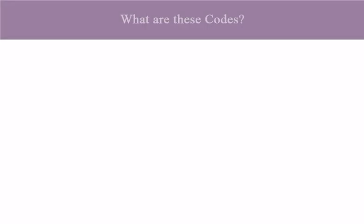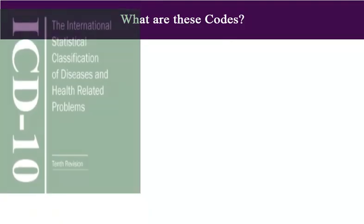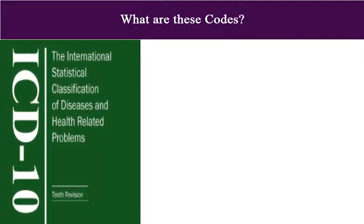What are these codes? There are two classifications in use for coding. The first is the International Classification of Diseases, 10th Revision, commonly known as ICD-10. This classification has been devised by the World Health Organization and its codes cover all reasons for patients' admissions to hospital. These codes are widely used internationally.